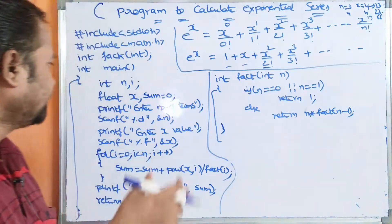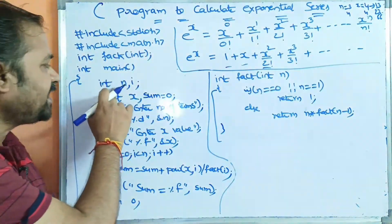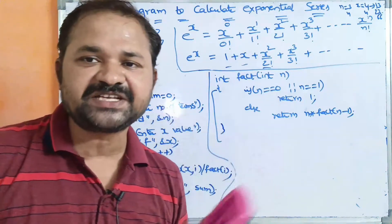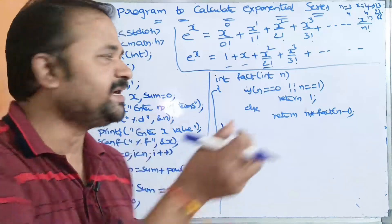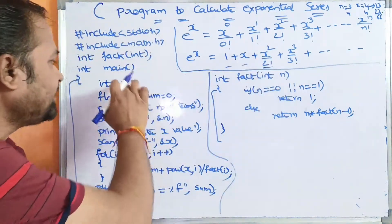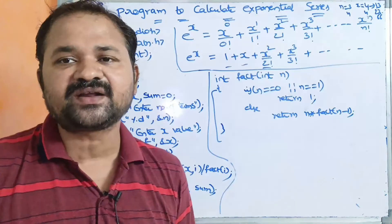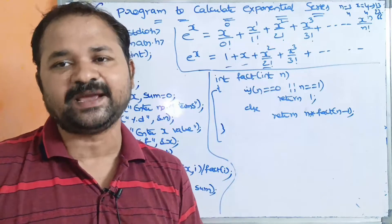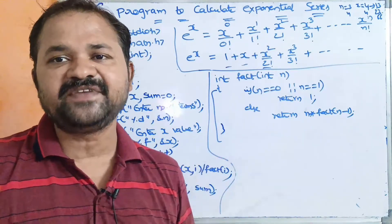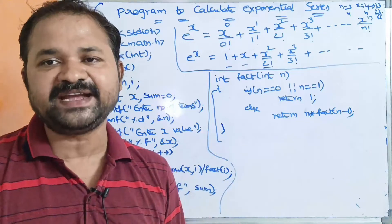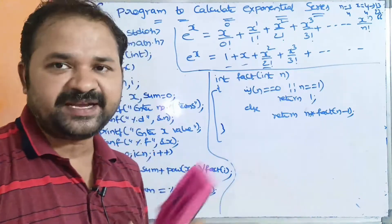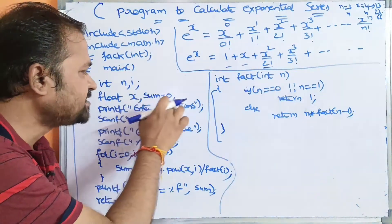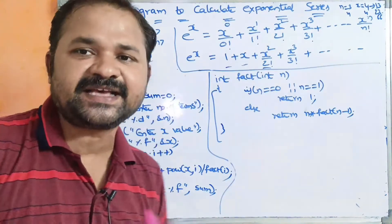The fact function accepts an integer as the argument and returns an integer value. Now let us see the main function. In int main, we declared two integer variables n and i, where n stands for number of terms — how many terms we have to add — and i is for repetition purpose. If n value is 3 then we repeat the loop 3 times, if n value is 20 then we repeat it 20 times, so i is used for iteration.